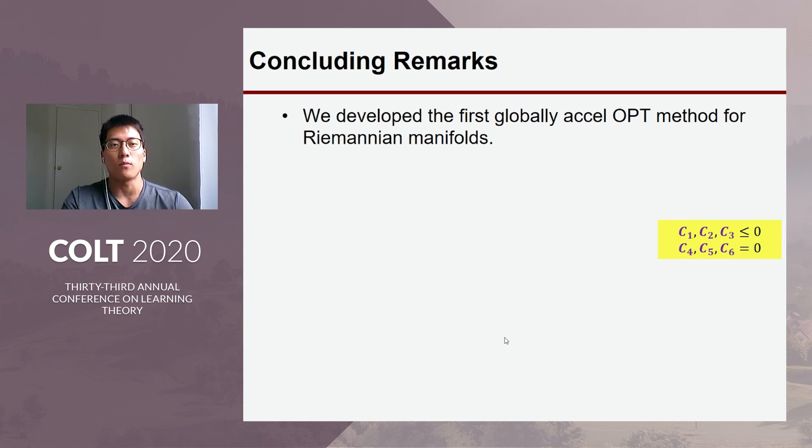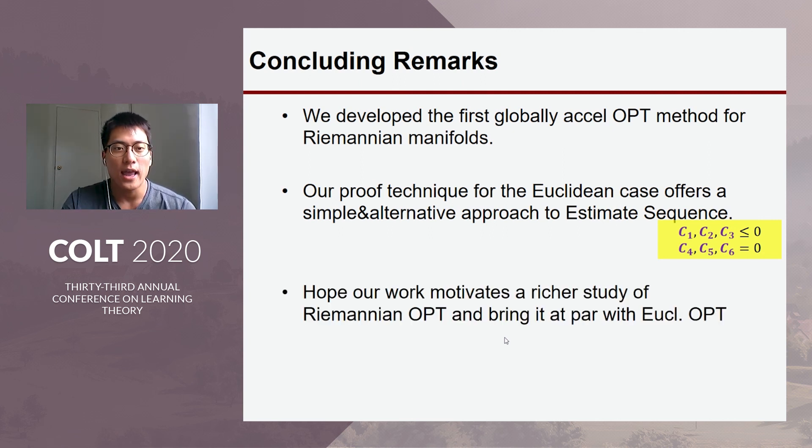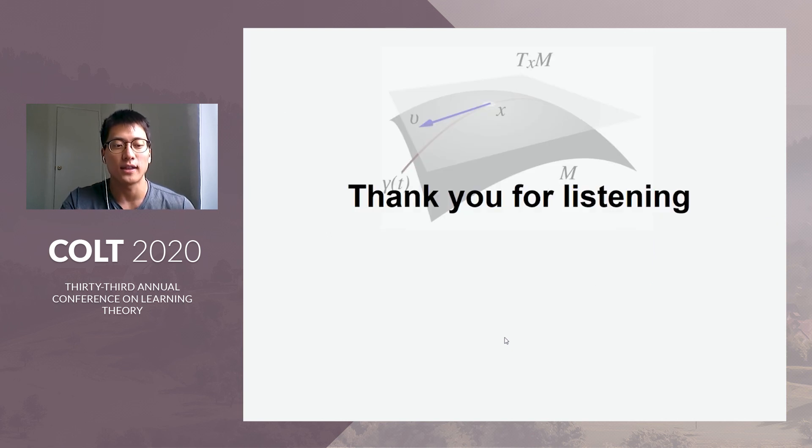So, let me conclude this with some remarks. We developed the first globally accelerated optimization method for Riemannian manifolds. Our proof technique for the Euclidean case notably offers a simple alternative approach to estimate sequence, which actually indeed has puzzled researchers as to the scope of the analysis and the technique. And we really hope that our work initiate the study of Riemannian optimization and bring our knowledge at par with Euclidean optimization. Thank you for listening.